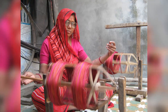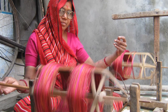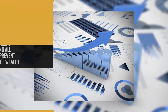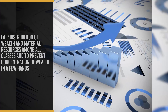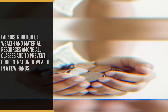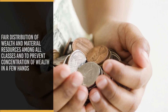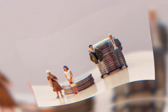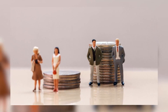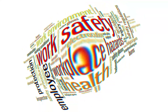Socialistic Principles: adequate means of livelihood for all citizens, fair distribution of wealth and material resources among all classes and to prevent the concentration of wealth in few hands, and equal pay for equal work for men as well as women.